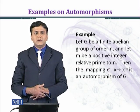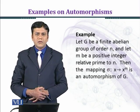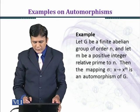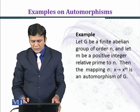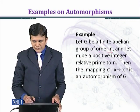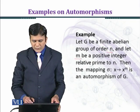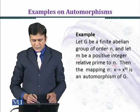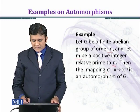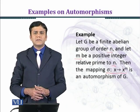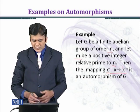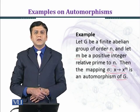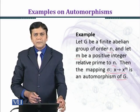Now we shall consider another example of automorphism. Let G be a finite abelian group of order n, and let m be a positive integer relatively prime to n. Then the mapping sigma from x to x raised to power m is an automorphism of G. Let's solve this example.